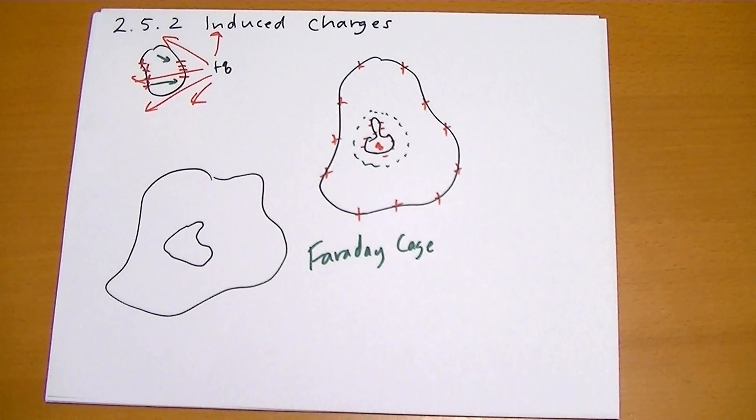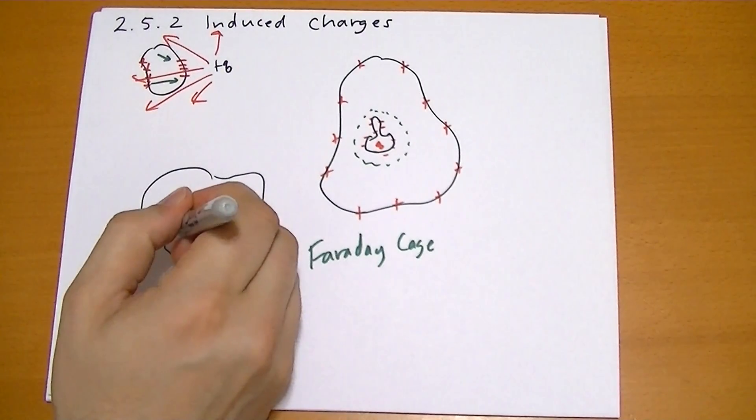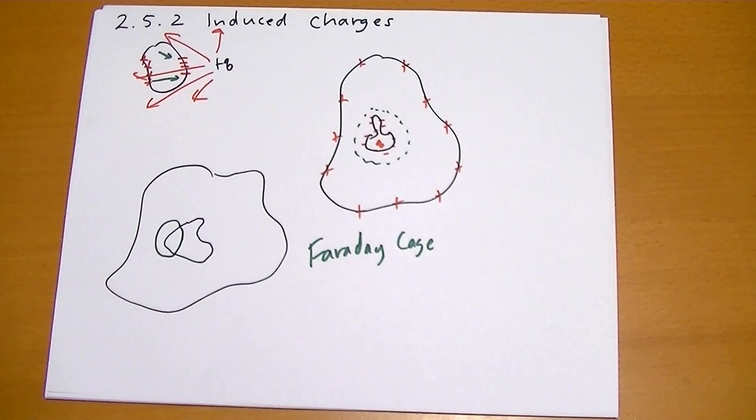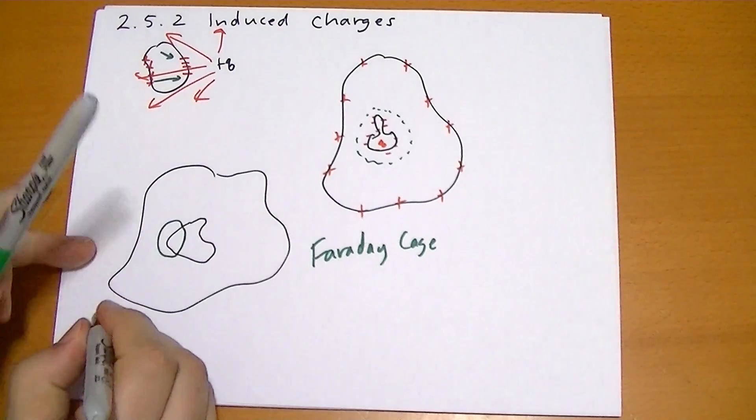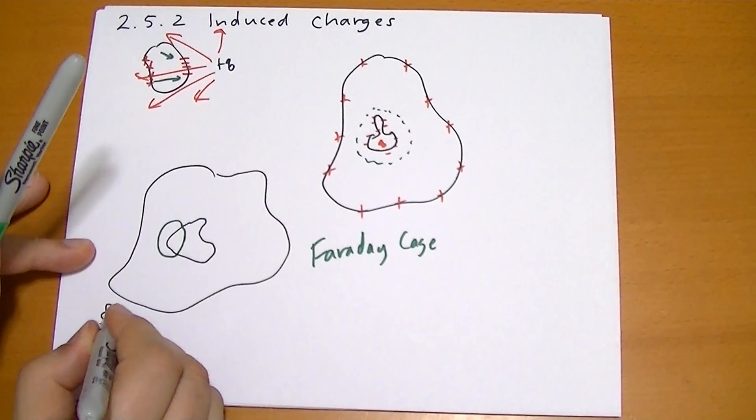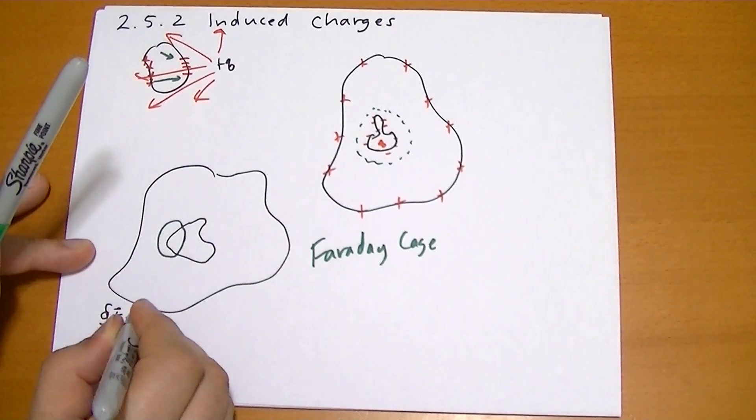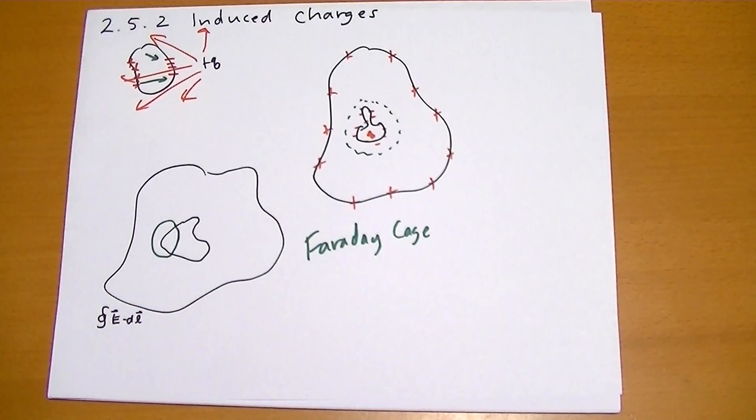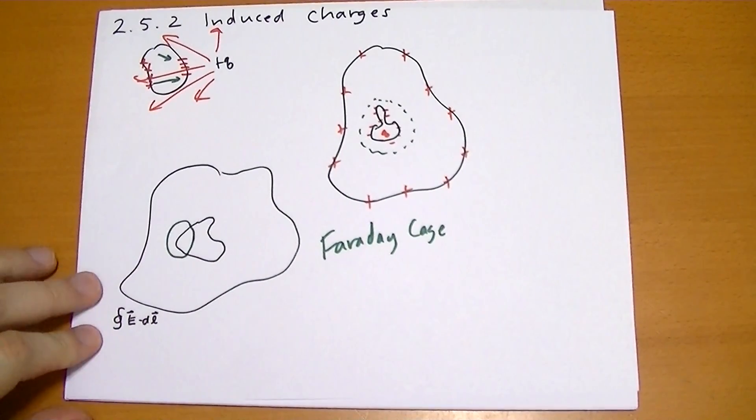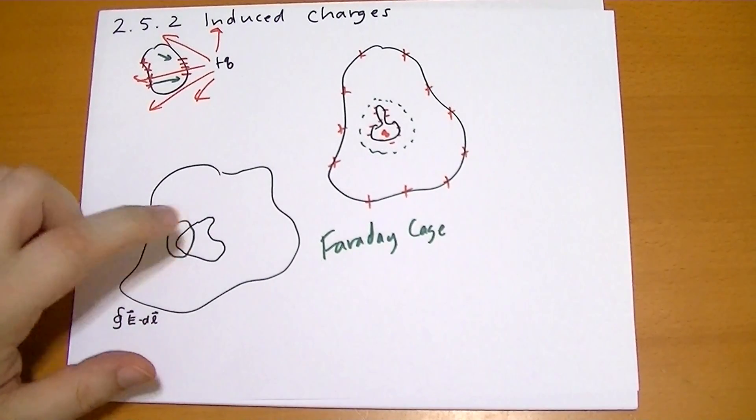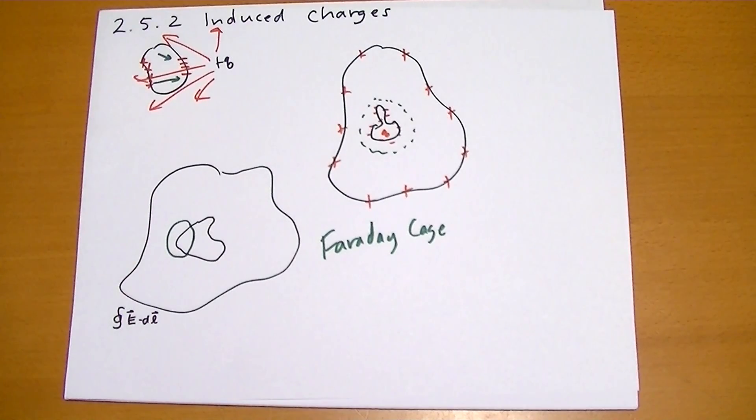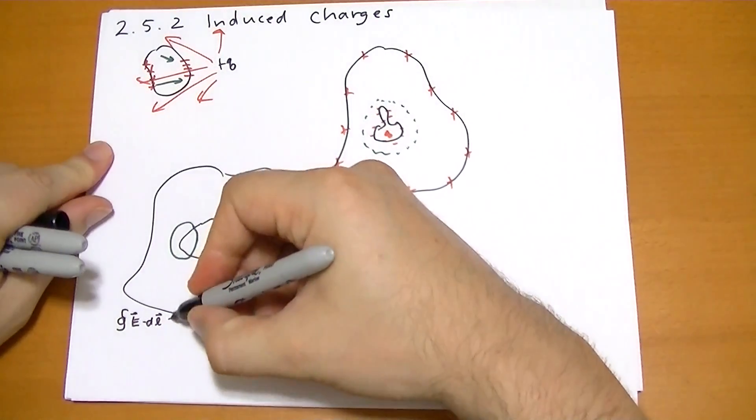So why is that charge zero? There's actually a really simple proof. Let's take some path that goes through that center. We take the closed loop integral of E vector dot dL vector of that path. Because there's no curliness to the electric field, the sum total must be zero. The E fields do not curl, so this equals zero.